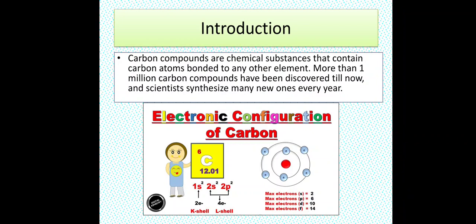Introduction. Carbon compounds are chemical substances that contain carbon atoms bonded to any other element. More than 1 million carbon compounds have been discovered till now and scientists synthesize many new ones every year.